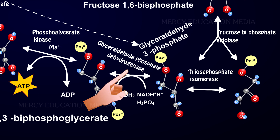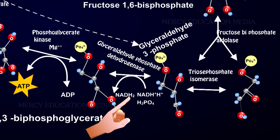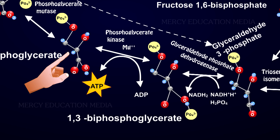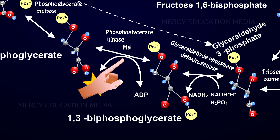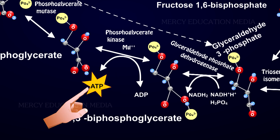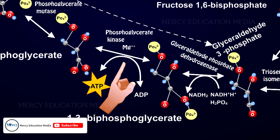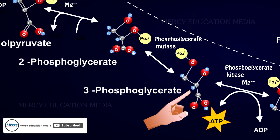A molecule of glyceraldehyde-3-phosphate is phosphorylated and oxidized to 1,3-bisphosphoglyceric acid by glyceraldehyde-3-phosphate dehydrogenase, forming 1 NADH₂. 1,3-bisphosphoglyceric acid is then dephosphorylated to 3-phosphoglyceric acid by phosphoglyceric kinase, forming 1 ATP. This type of ATP synthesis is called substrate level phosphorylation.